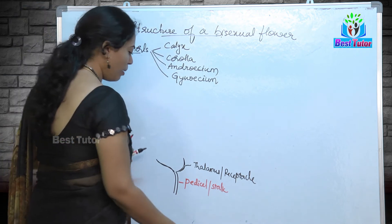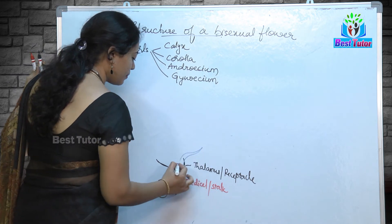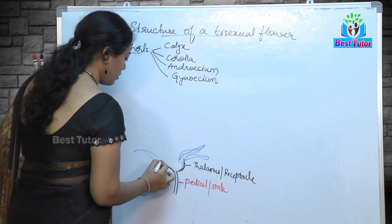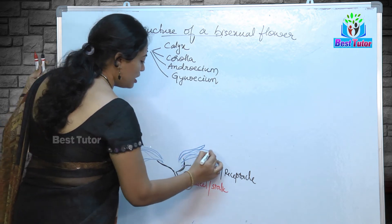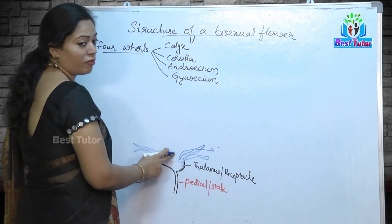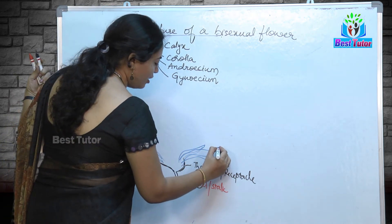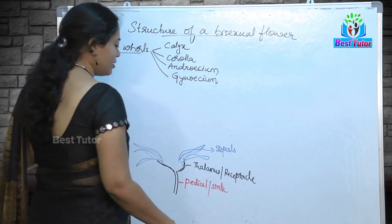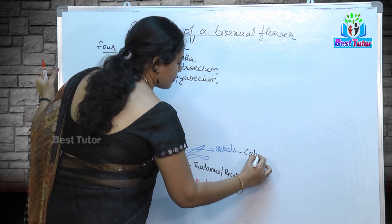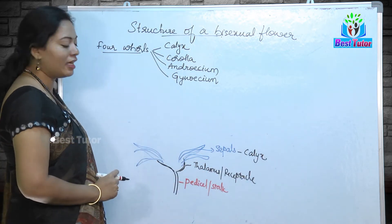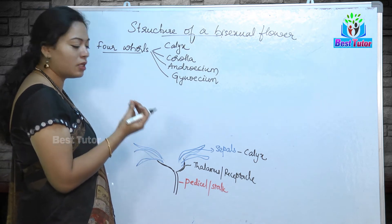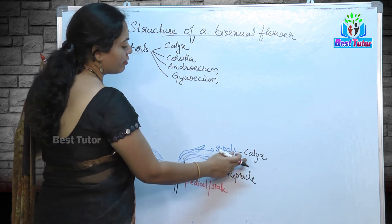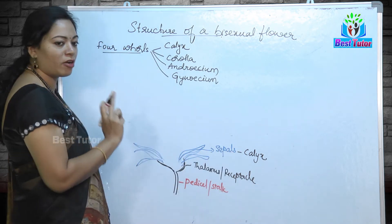The first floral part is always green in color — though drawn in blue here, they are not blue in color. These are sepals, which are collectively known as calyx. The green colored parts we observe in a flower structure are called sepals, and all the sepals together form the whorl known as calyx, the first part of a flower.